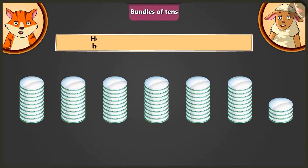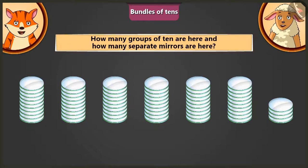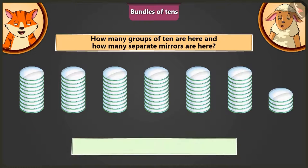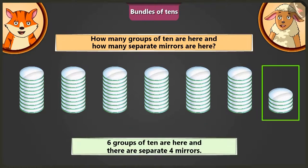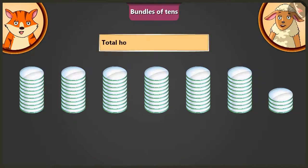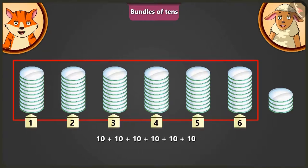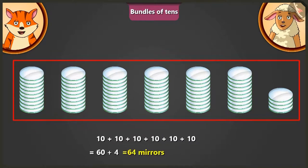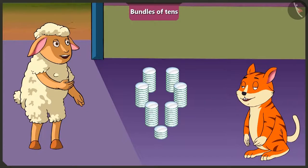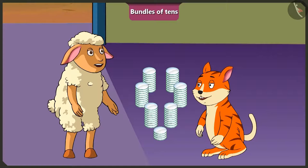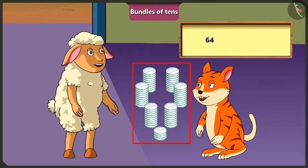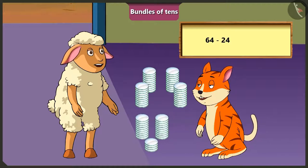Lily, how many groups of 10s are there in total and how many mirrors are there separately? There are 6 groups of 10s and 4 mirrors separately. So, how many mirrors are there in all? There are a total of 6 groups of 10. That means 60 and 4 — 64 mirrors. Wow, Lily, you counted so many mirrors very easily. Now I can give you 24 mirrors out of these 64 mirrors. So, I will have 40 mirrors left.